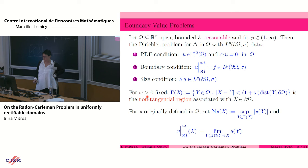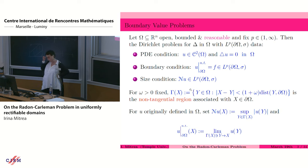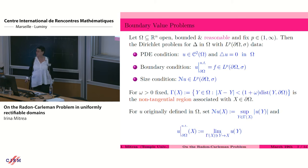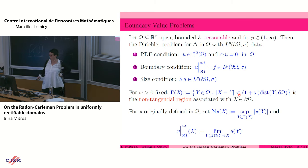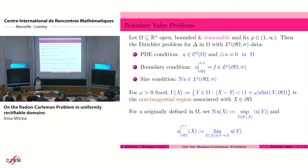To set things up, for omega a parameter fixed, gamma of x — where x is a point on the topological boundary — consists of all those points y in the domain omega such that the distance between x and y is controlled by 1 plus omega times the distance between y and the topological boundary. This is called the non-tangential region generated by the point x. You can think of it as consisting of points y in the domain omega such that they cannot be close to the boundary without being close to the point x that generated them.